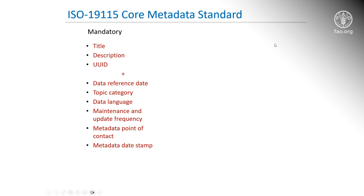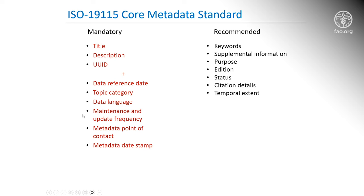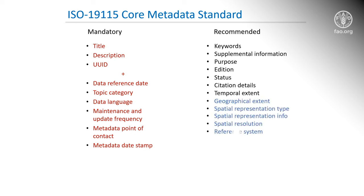The ISO core metadata elements, whose mandatory ones you are now seeing on the screen, allow indeed for detailed information about the identification of the data. They provide also information that characterizes the geospatial resource, as well as information to access it, including distribution methods and instructions, and to assess its quality and fitness to use.